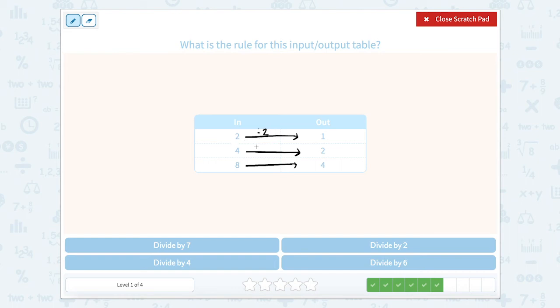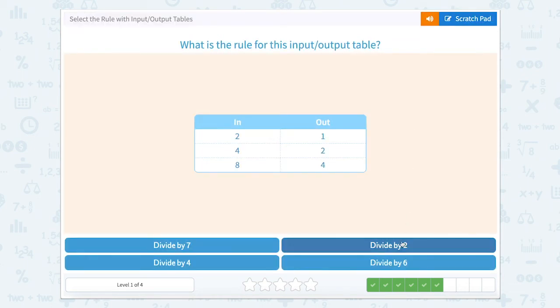Well, if I have 4 divided by 2, well 4 divided by 2, that's 2, because 2, 4, that's 2 twos. And then 8 divided by 2, or 8 divided in half, is 4. So we're going to divide by 2 for this one.